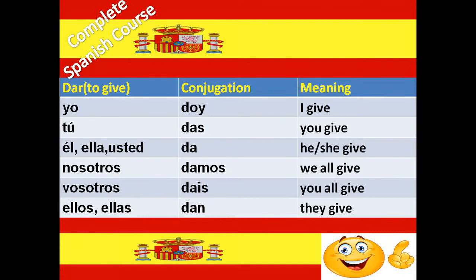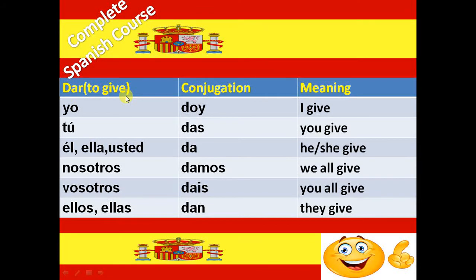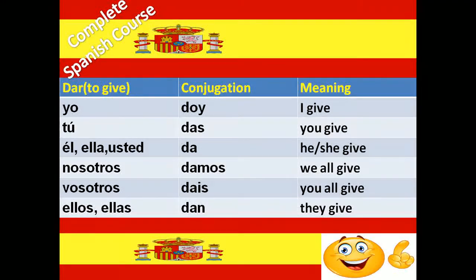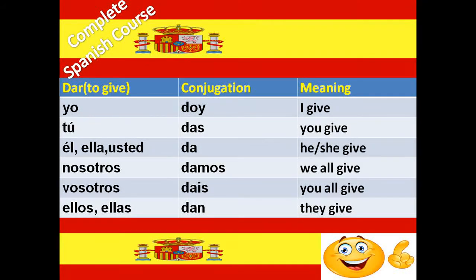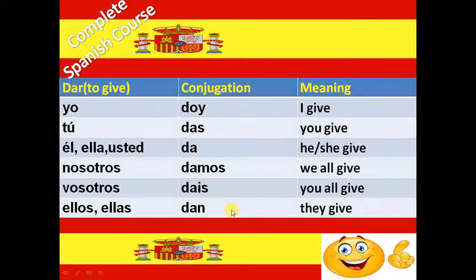Next irregular verb is Dar. Dar means to give. And the conjugation of Dar verb is Doy, Das, Da, Damos, Dais and Dan.